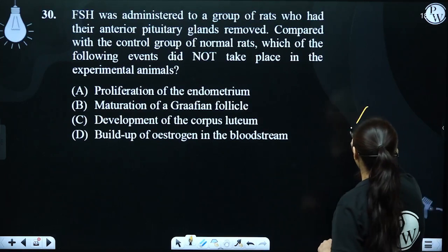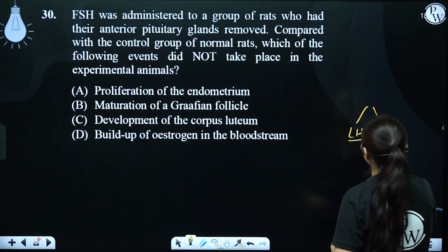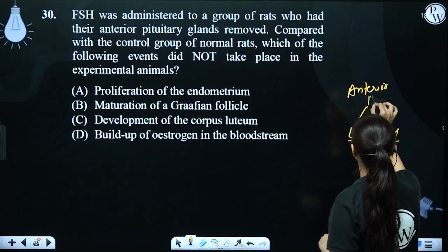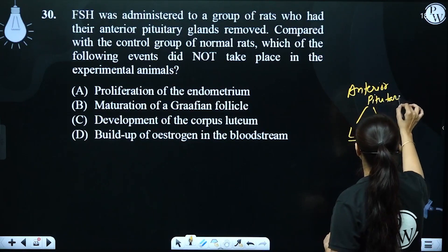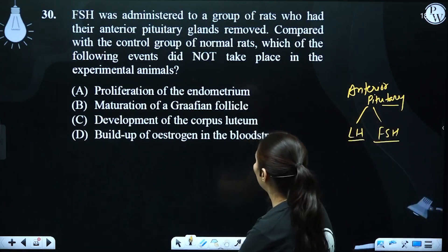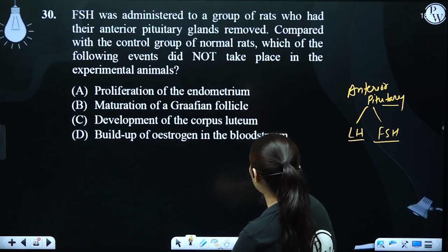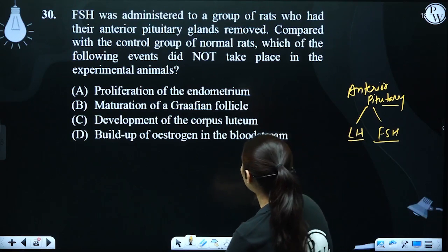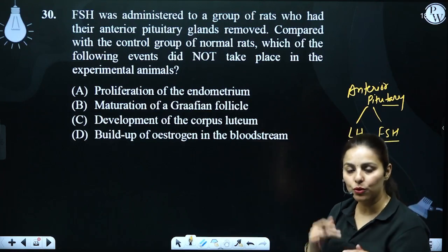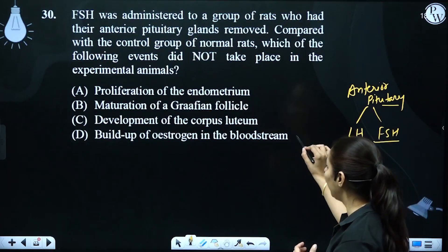With the anterior pituitary gland removed, LH and FSH — which are released by the anterior pituitary — would no longer be produced. Now, comparing this group with normal rats, which event will not take place? Is there not a proliferation of the endometrium?